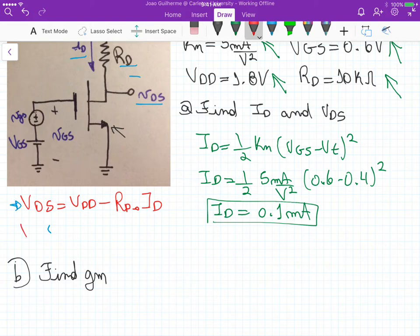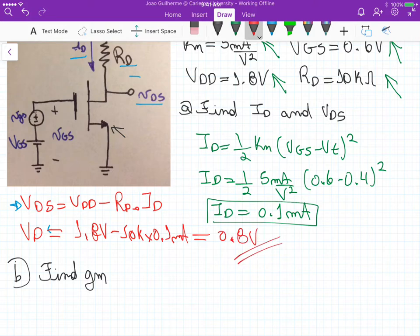We can calculate VDS as VDD, which is 1.8 volts, minus RD, which is 10k, times 0.1 milliamps, and that gives us a VDS of 0.8 volts. Those are the values for part A.